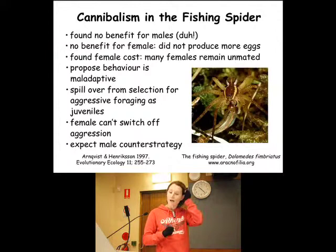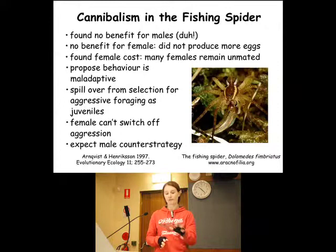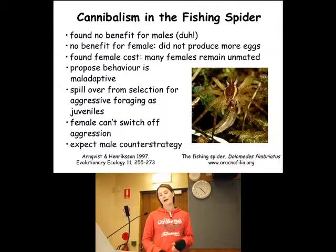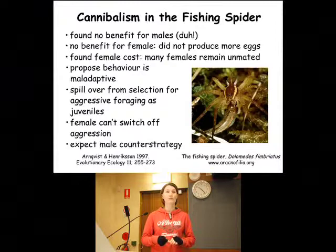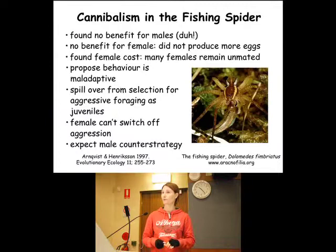This is cannibalism in the fishing spider — it's a kind of uncommon example because these researchers found no benefit for the males, which is kind of expected. But what was weird is that they found no benefit for the female either, so the female didn't produce more or larger eggs as a result of eating the male. And they found a cost, actually, because many females remained unmated — virgin females didn't obtain any matings if they cannibalised all the potential males.